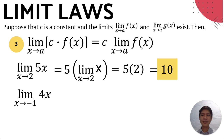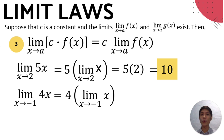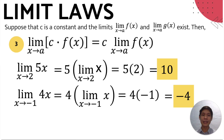Let's have another example: find the limit of 4x as x approaches negative 1. Following the same procedure, we put the constant 4 before the limit of x as x approaches negative 1. Evaluating the limit of x as x approaches negative 1 using special limits, we get negative 1. Multiplying negative 1 and 4, we get negative 4 as the limit of 4x as x approaches negative 1.